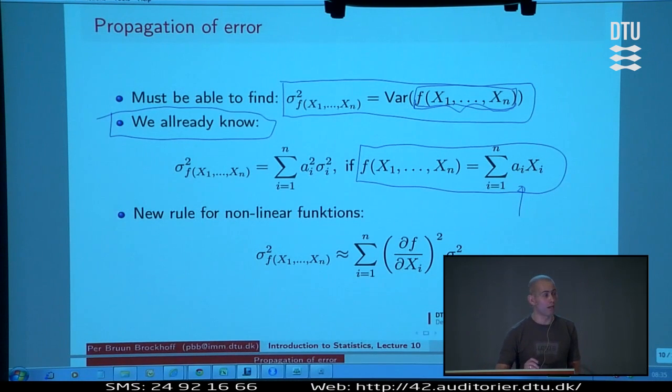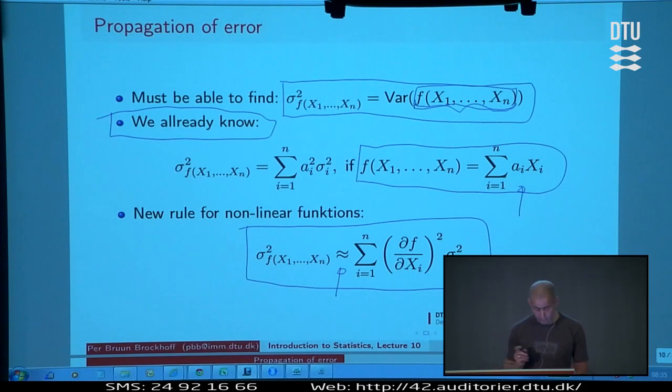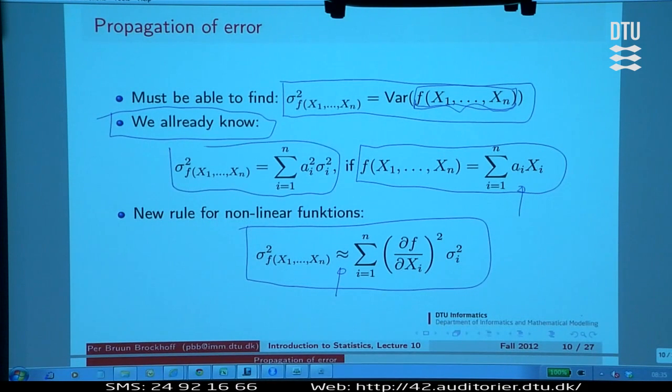But now the point is I'm more ambitious. I'm saying that F could potentially be a nonlinear function of all the inputs. It could be any complex function. Then we have this classical error propagation approximate formula. That's important to emphasize. It's an approximate formula that combines each individual variance, but the things that it combines them with is not a simple coefficient from the linear expression, it's a derivative of the function with respect to each individual x here. We need to be able to find derivatives of nonlinear functions to be able to apply this rule.